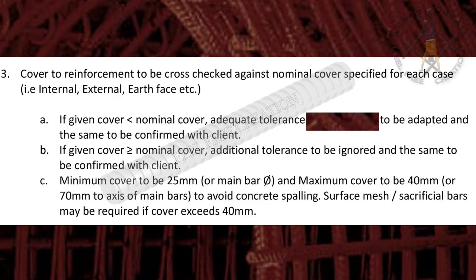Point 3. Cover to reinforcement to be cross-checked against nominal cover specified for each case — internal, external, earth face, etc. If given cover is less than nominal cover, adequate tolerance to be adapted and confirmed with client. If given cover is greater than or equal to nominal cover, additional tolerance to be ignored and confirmed with client.